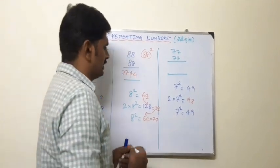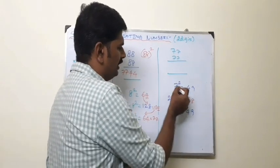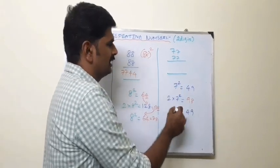Next, we have the next example, 77 into 77. Same procedure. 7 squared, double the 7 squared, and again 7 squared. This is the result.